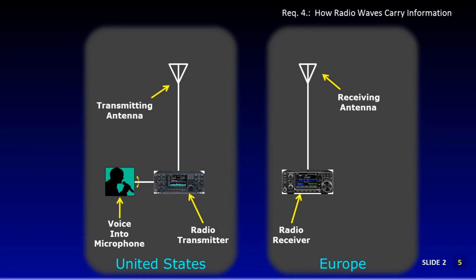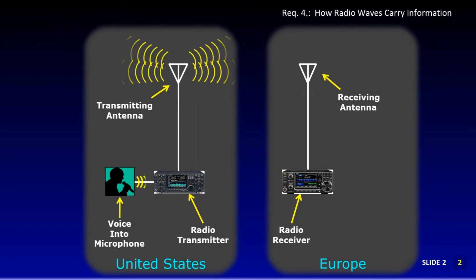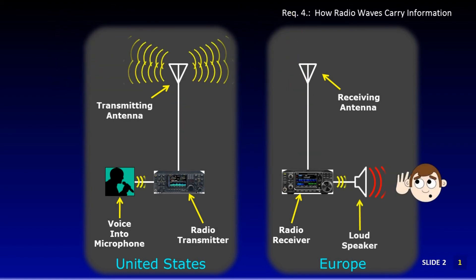The energy waves are generated when some signal, like a voice into a microphone, is presented to the radio transmitter. The transmitter converts the voice, in this example, to radio wave energy and sends this energy up the antenna. The antenna throws off the waves in directions and distances based upon how the system is designed. The transmitted energy waves are collected by the receiving antenna, designed to detect them, and sends the radio wave energy down to the receiver. The radio receiver processes the energy waves and converts them into audio so that you can hear through speakers or headphones. Many radio receivers can be directly connected to a computer where the signal is digitized.